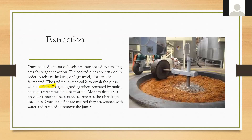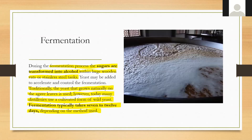Extraction occurs using the tahona in traditional methods — the cooked piña is mashed by a large stone wheel, traditionally pulled by a donkey. Today, more modern distilleries use mechanical crushers to separate the fiber from the juices. If you're a tequila purist and want to be as traditional as possible, you'll want to see the donkey and the tahona; if you're more focused on meeting demand, you'll see a more modern style of production.